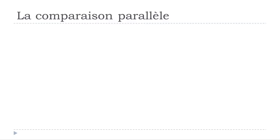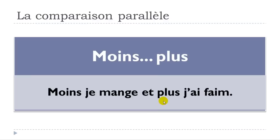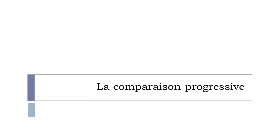For MOINS ET PLUS: MOINS JE MANGE ET PLUS J'AI FAIM — the less I eat, the more I am hungry. Same structure: start with MOINS, then ET, then PLUS and the second clause.